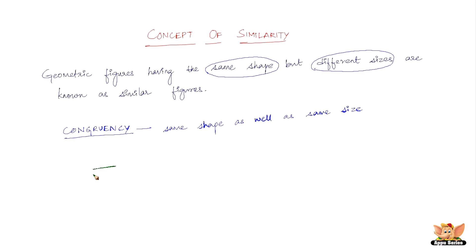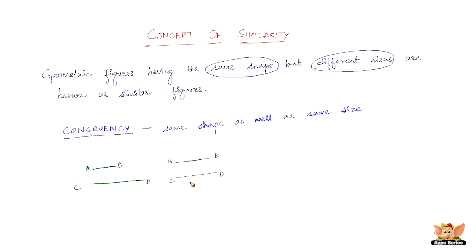Say for example we've got one line segment and another longer one. Let's name them AB and CD. They are both similar to each other shape-wise — they're straight lines — but the length varies. If the length varies, they are still similar figures but definitely not congruent. If I draw AB and CD of equal length, then they are similar as well as congruent, because they're the same shape and the same size.